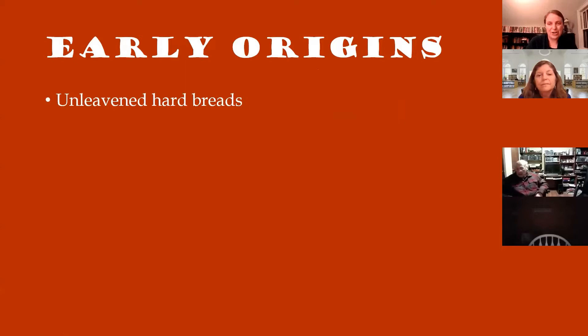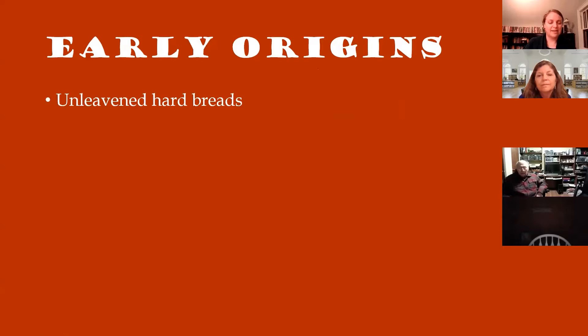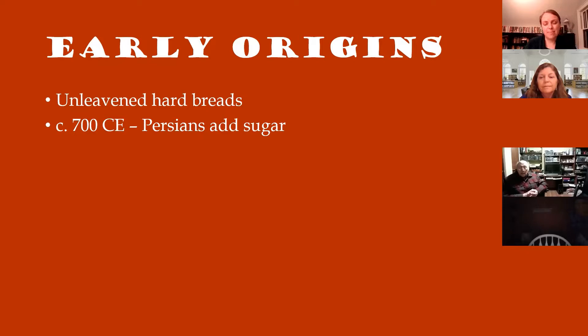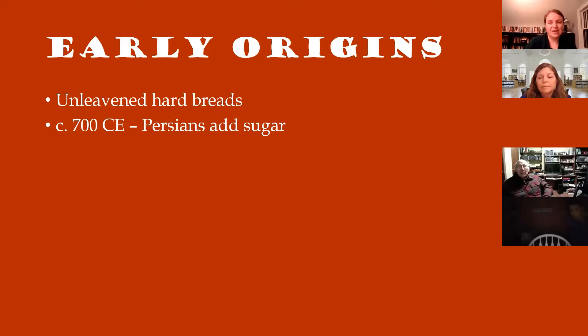So I thought we would talk first about the origins of cookies more generally. The ancient ancestor of modern cookies is unleavened hard breads, and pretty much every culture across the globe that has a grain-eating culture has some sort of unleavened hard bread. In Europe, they're largely unsweetened. Really the first ancestor of what we consider modern cookies with sugar in them was brought into Europe by the Persians. The Persian Empire had explored out to India — India is where sugarcane is indigenous — and the Persians brought sugar back to Europe, so they are some of the first recorded history of sweetened unleavened hard breads. That's the other ancestor of cookies.